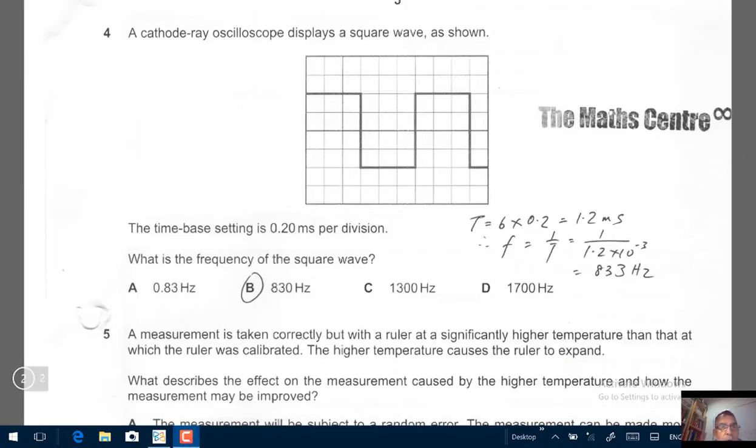Question number 4. A cathode ray oscilloscope displays a square wave as shown. The time-based setting is 0.2 millisecond per division. What is the frequency of the square wave? So to find the frequency, we will use 1 over the period. The period here, let's count the number of squares. 1, 2, 3, 4, 5, 6 squares.